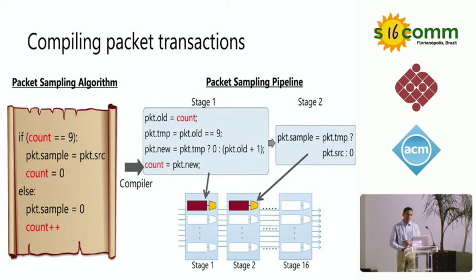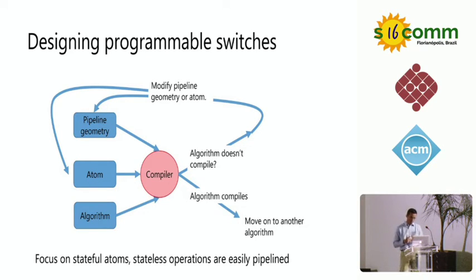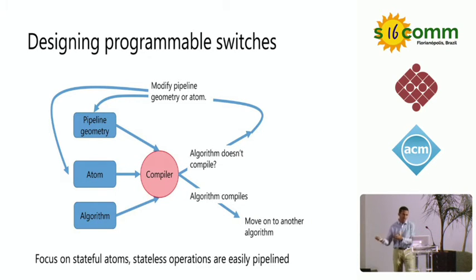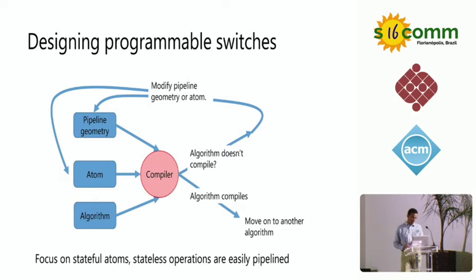Let's see how we use this compiler to design a programmable switch and then compile to it. The compiler takes three inputs: an atom, a pipeline of such atoms (the depth and width), and the algorithm itself — and it tells you whether the algorithm would run on that pipeline. Invariably the algorithm doesn't compile the first time; you end up either increasing the number of atoms in the pipeline or changing the atom itself, and keep iterating. At some point the algorithm compiles, then you move on to another algorithm, repeating until you have an atom you're satisfied with. We focus on stateful atoms since stateless operations are easily pipelined.